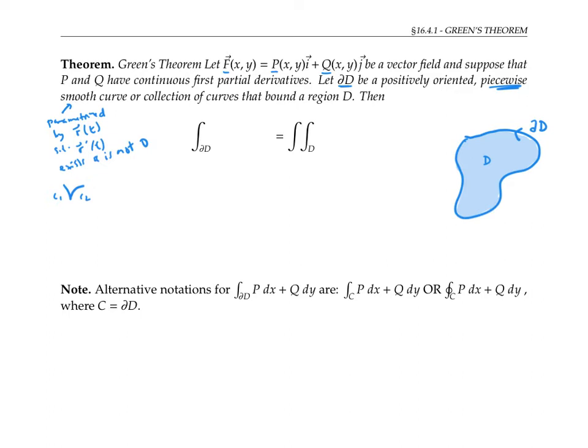Green's theorem is going to let us relate the line integral around the curve boundary of D to a double integral inside the region. We're going to take the line integral of our vector field, so that's the line integral of F·dr.